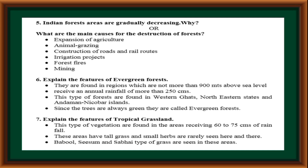Explain the features of evergreen forests. They are found in regions which are not more than 900 meters above sea level and receive an annual rainfall of more than 250 cm. This type of forest is found in the Western Ghats, Northeastern States, and Andaman and Nicobar Islands. Since the trees are always green, they are called evergreen forests.